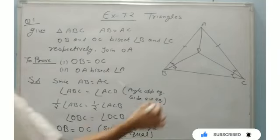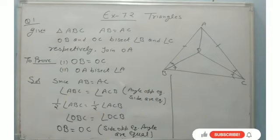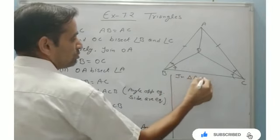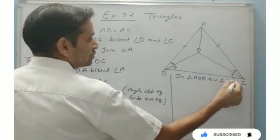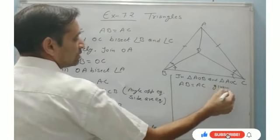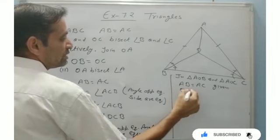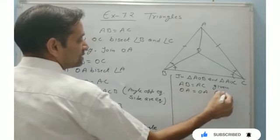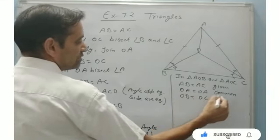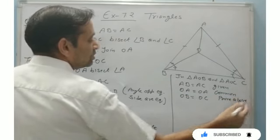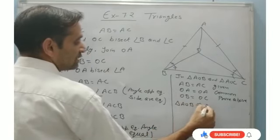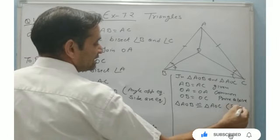Now for the second part, to prove that OA bisects angle A, we take triangle AOB and triangle AOC. In these two triangles: AB is equal to AC (given); OA is equal to OA (common part); and OB is equal to OC (which we have just proved). Therefore triangle AOB is congruent to triangle AOC by the SSS criteria of congruency.